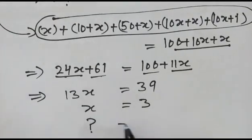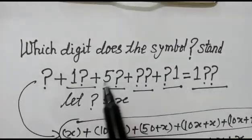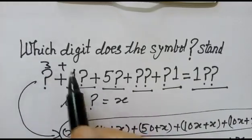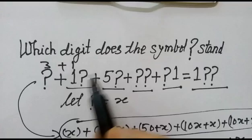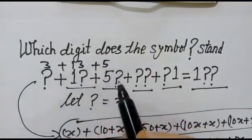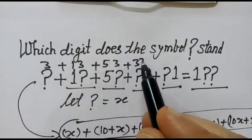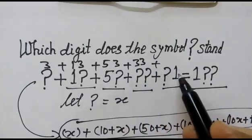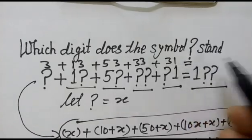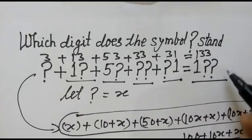Now we verify this: 3 plus 13 (symbol is 3) plus 53 (symbol is 3) plus 33 plus 31 equals 133. Okay friends, thank you.